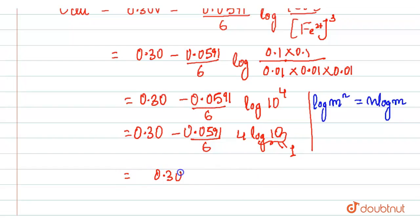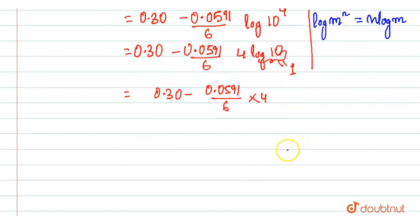So, 0.30 minus 0.0591 divided by 6 into 4. When you solve it, you will get 0.30 minus 0.0394 and when you solve it, you will get 0.26 volt. So, the cell potential of the reaction will be 0.26 volt. Thank you.